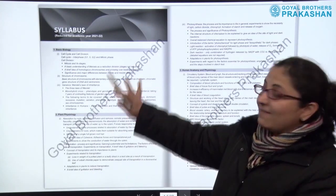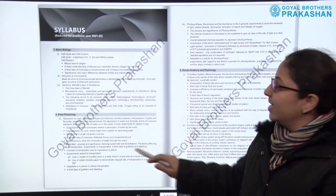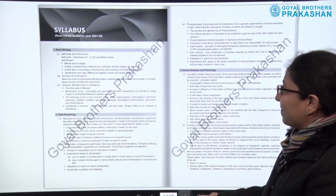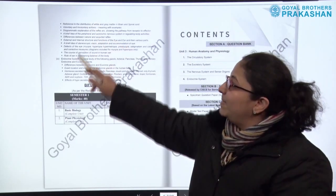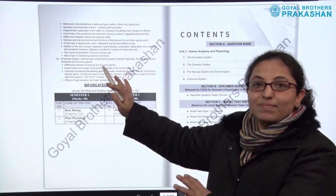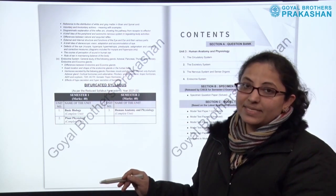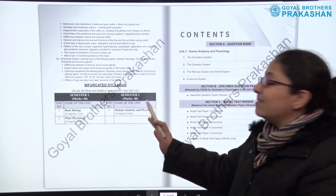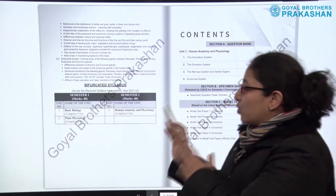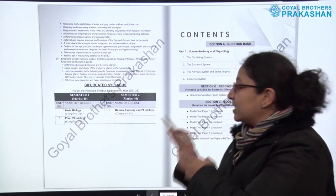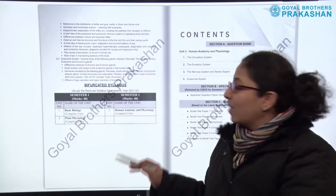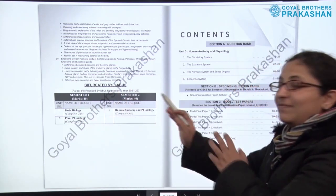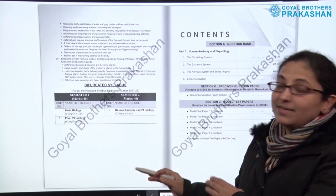To start with, we have the complete syllabus at the beginning. After the complete syllabus, we have the bifurcated syllabus, which includes semester 1 syllabus and syllabus for semester 2. This book is based on semester 2. We all know that these semesters are for 40 marks each.